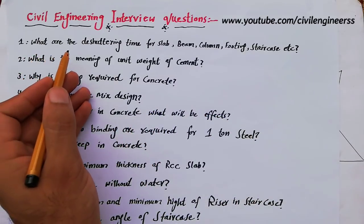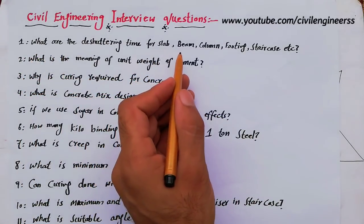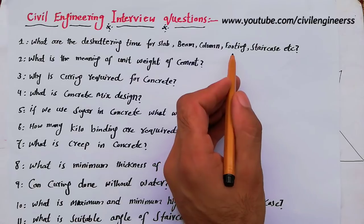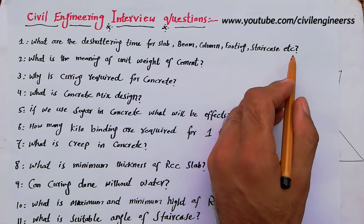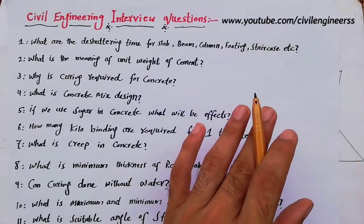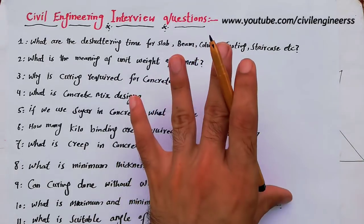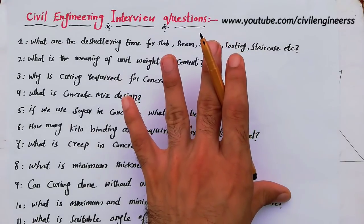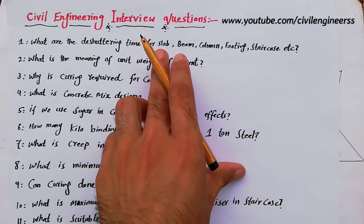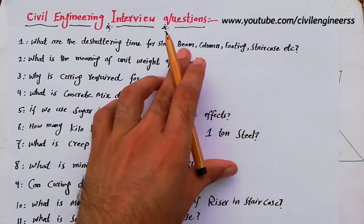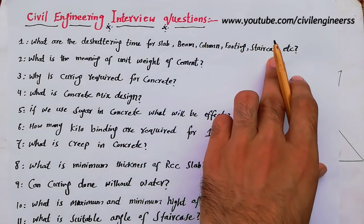The first question is: what are the de-shuttering times for slab, beam, column, footing, stair, etc.? What are the de-shuttering times for formwork in slab, beam, column, footing, stair, etc.?